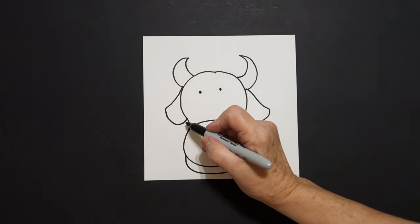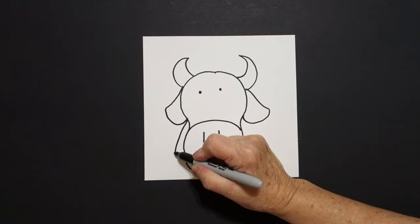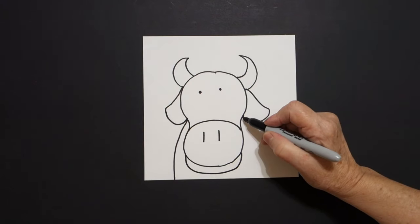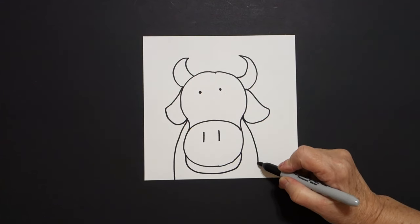Come down over on this space, draw a big curve line down, off the page on the left. Come over here, draw a big curve line down.